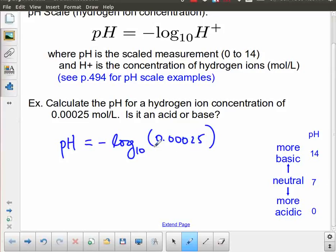We could go straight to the calculator, and that works out to be the negative log of 0.00025 is equal to approximately 3.6. If we take a look, 3.6 is going to be around here somewhere, and so therefore the solution is an acid.